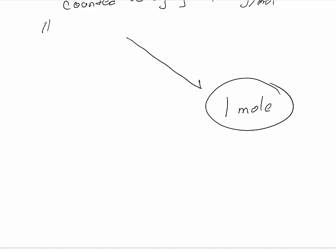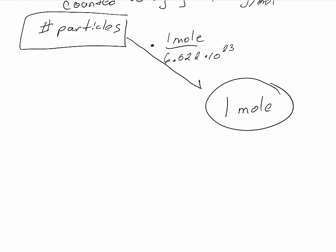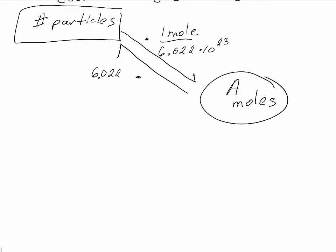So if we wanted to convert number of particles to moles, we would multiply by 1 mole over 6.022 times 10 to the 23rd. So we would divide by Avogadro's number of particles. If we had some number of moles and we wanted to know how many particles we had, if we had some number of moles of A and we wanted to know how many molecules we had, then we would multiply by the inverse here. We would multiply by Avogadro's number over 1 mole, substituting an appropriate label for whatever those particles were.